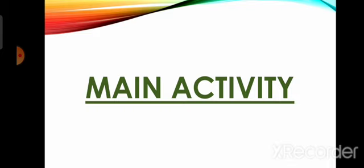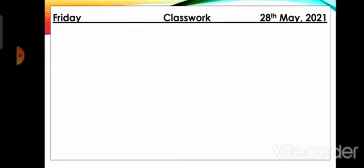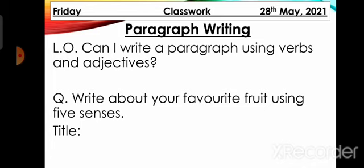Now it's time for the main activity. Take out your creative writing notebooks, open them up, and get ready. As you can see on the screen, today is Friday, 28th May 2021. In the middle, write 'Classwork.' Don't forget about proper nouns. On the next line, leave a two-finger gap from the margin line and write the topic: 'Paragraph Writing.' Underline it with a color pencil using a scale.